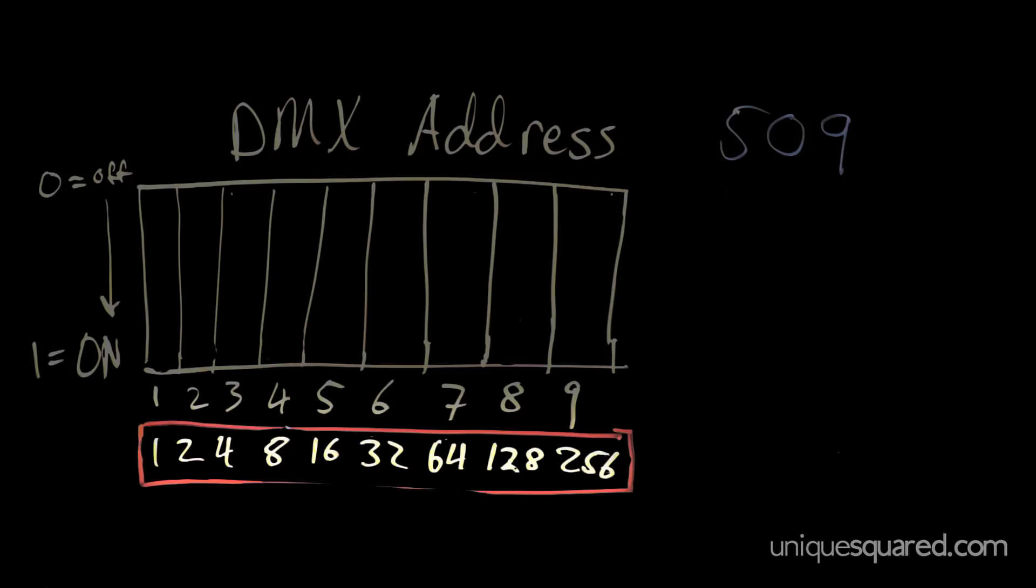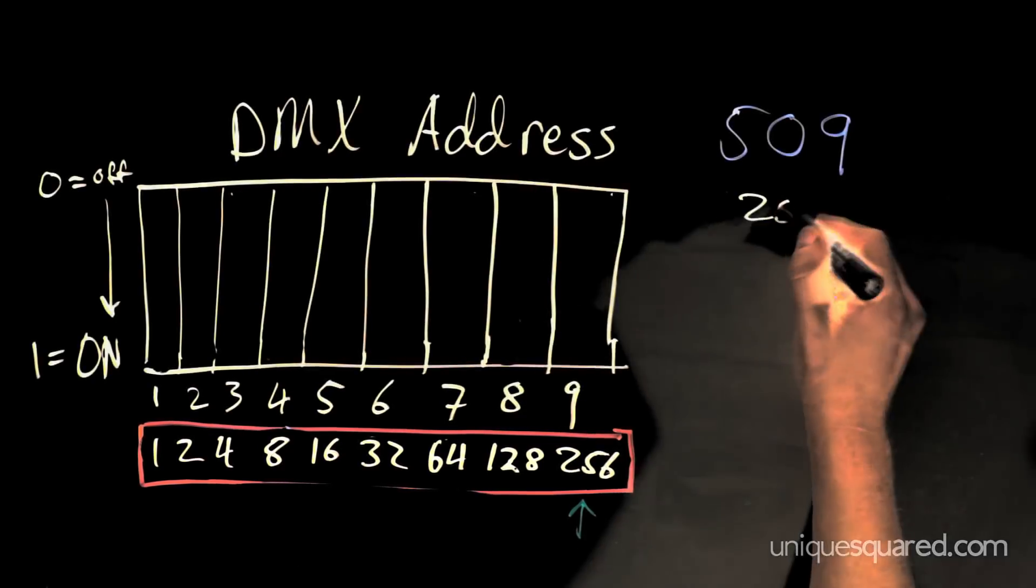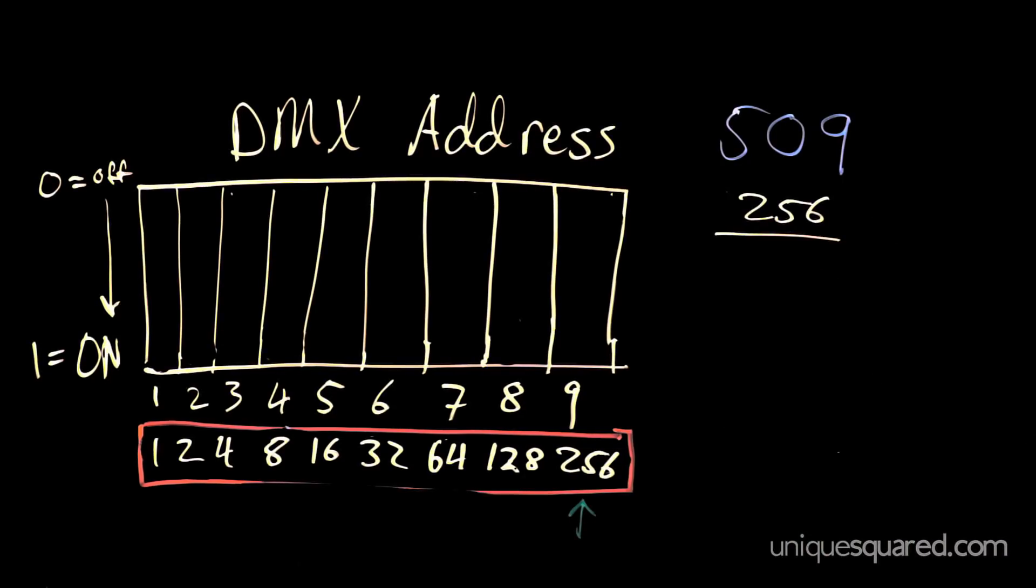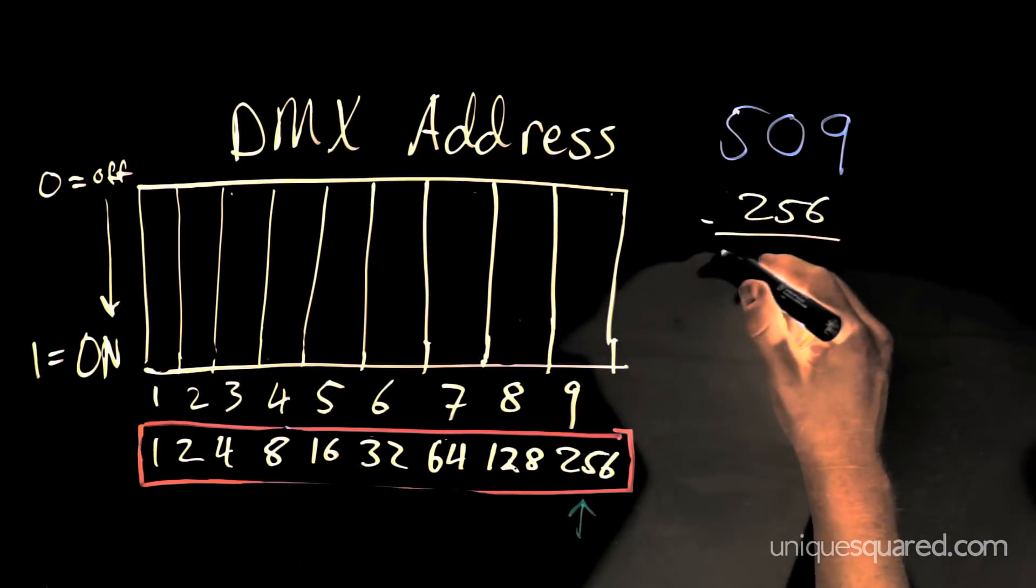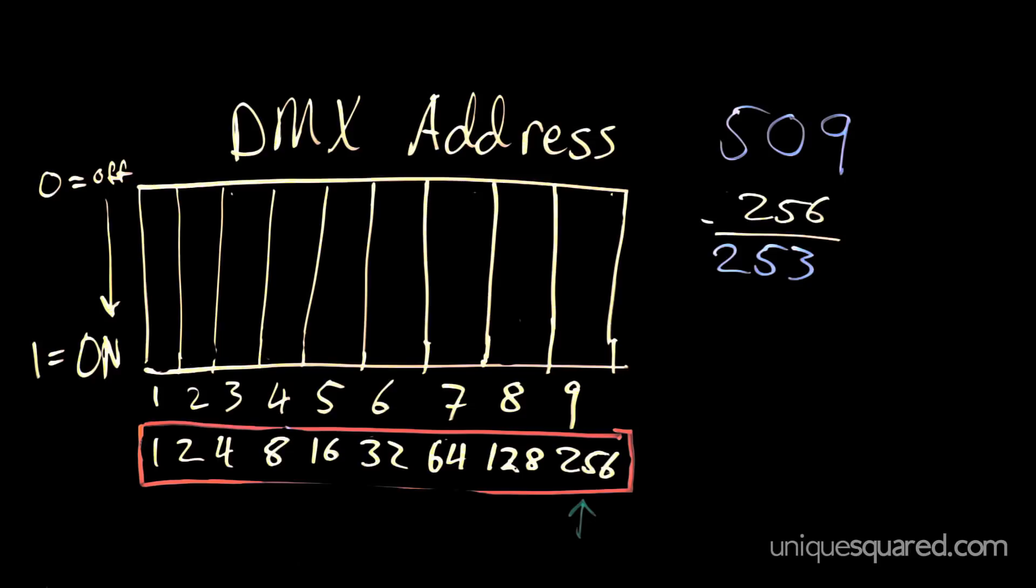choose the largest number that is equal to or smaller than 509. From this list, we see that 256 is the number that we want. Now, subtract 256 from our original number. We're left with 253.